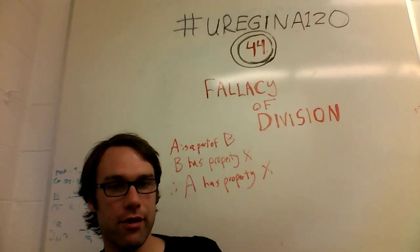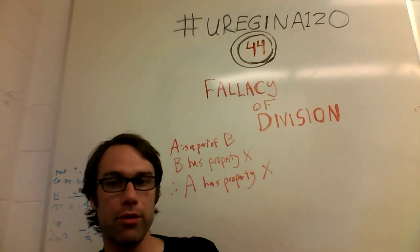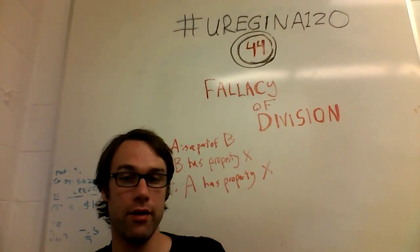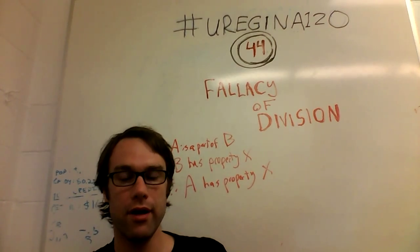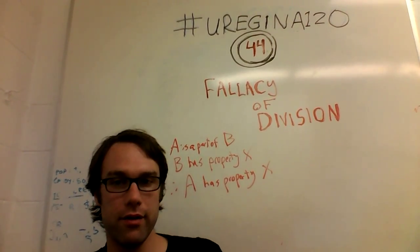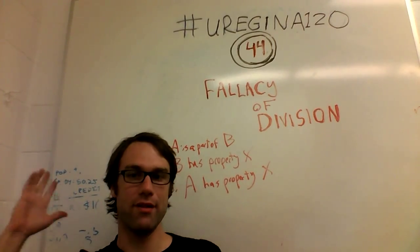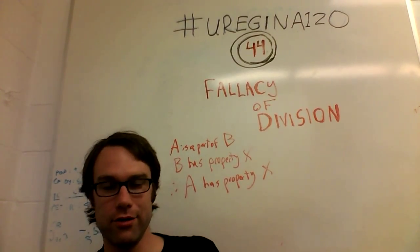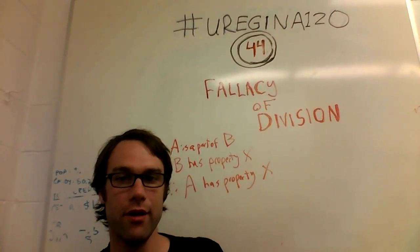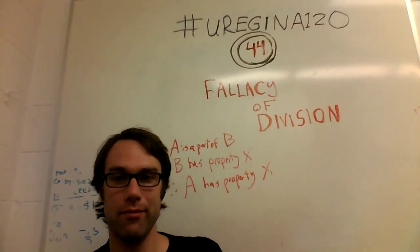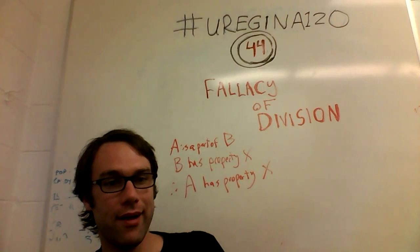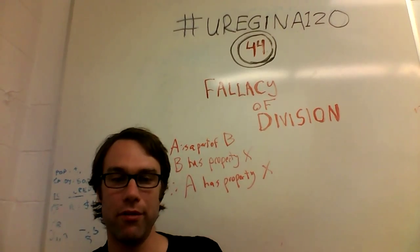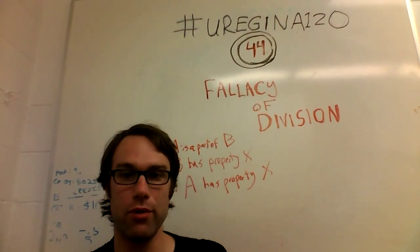It's worth pointing out that there are going to be valid examples of this, where there are some kinds of systems where if you take them apart, the subsets or the parts of the system will still have the properties involved. This is not saying that this is never true, but as a general rule, if you take a random system and start taking it apart and looking at its parts, it will not necessarily work by definition.